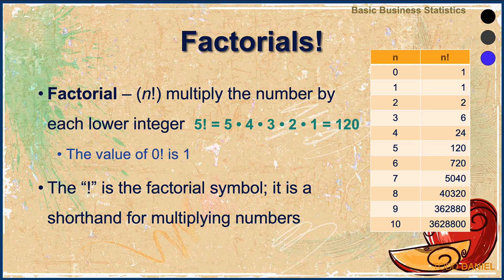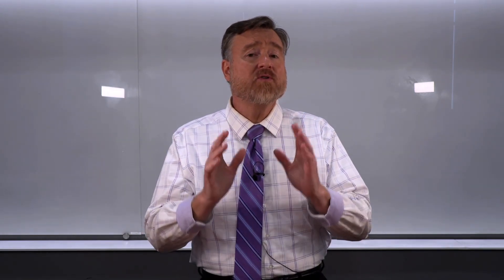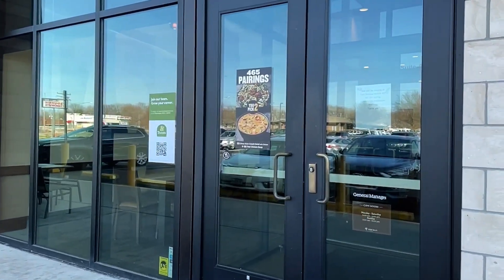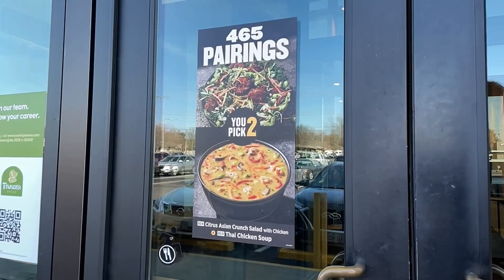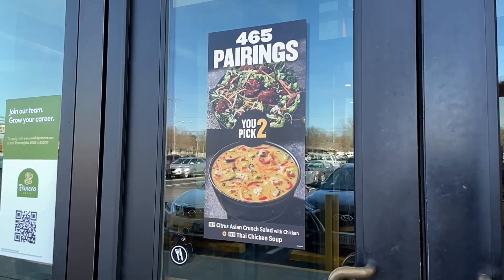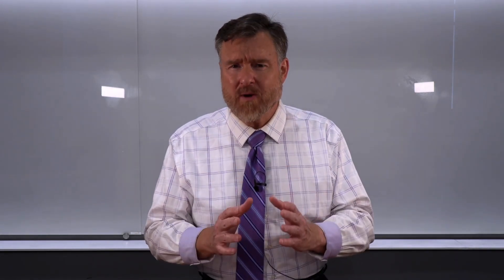But let me show you a real-world example. As I was on my way to a coffee shop one Sunday morning to meet a friend, I noticed on the doorway going into the restaurant this advertisement: 465 pairings — you pick two. And I immediately had to figure out how they came to the number 465. Don't worry, I'm going to show you. But first, I want to talk about combinations and permutations.